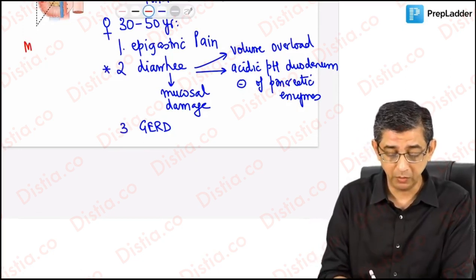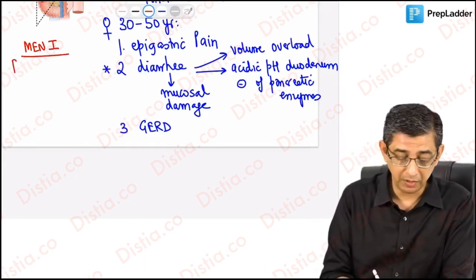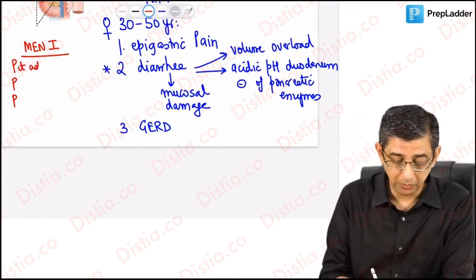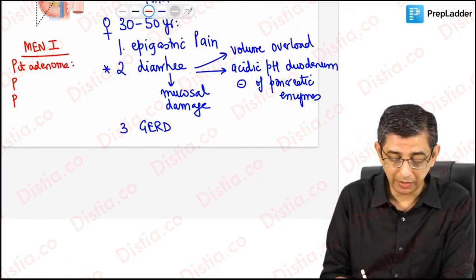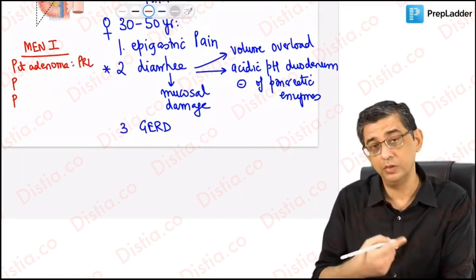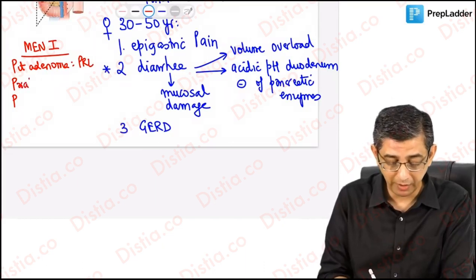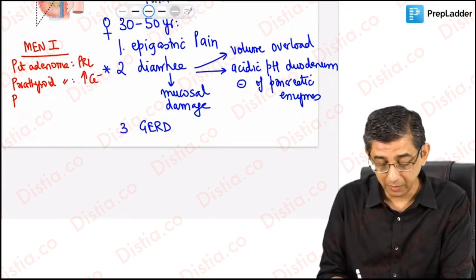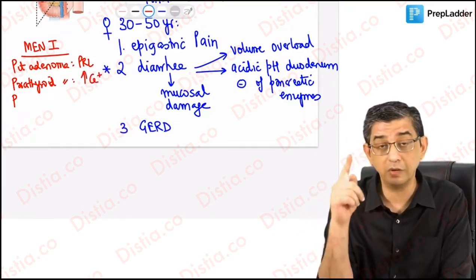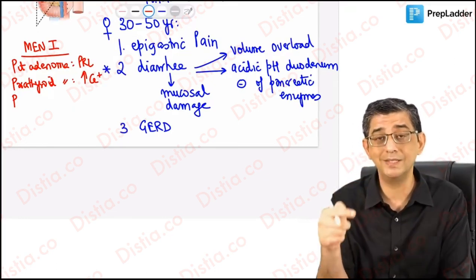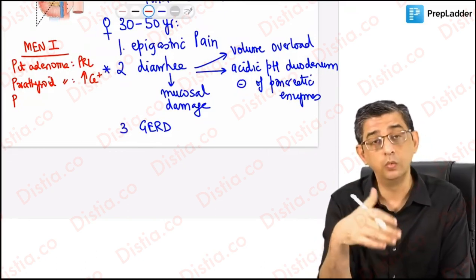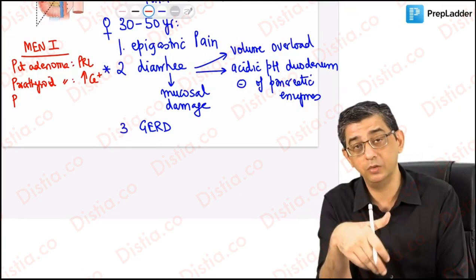You are aware of the fact that this condition can be associated with multiple endocrine neoplasia type 1. There are three tumors, each beginning with alphabet P in this case. This could be a pituitary adenoma which could be overproducing prolactin. When you come down to the second P, it could be a parathyroid adenoma.